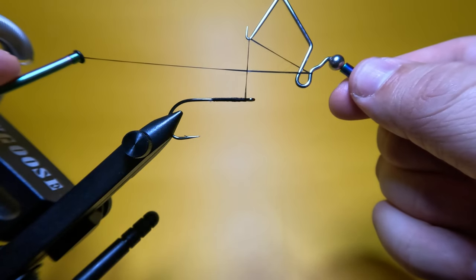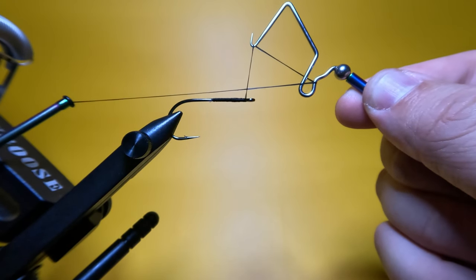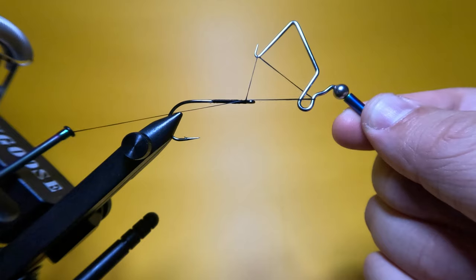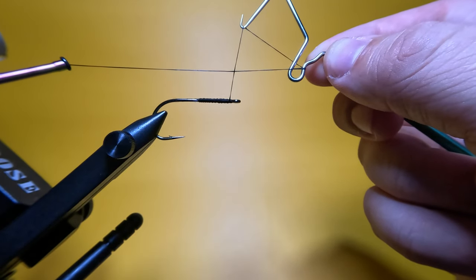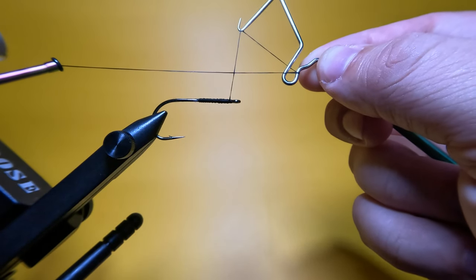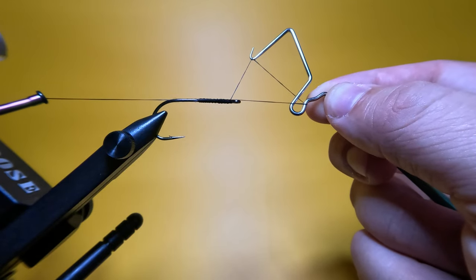And now we're going to drop our lowermost thread down until it meets that hook. So again, we have our reverse figure 4 here, and we just want to slide that thread down to the hook.